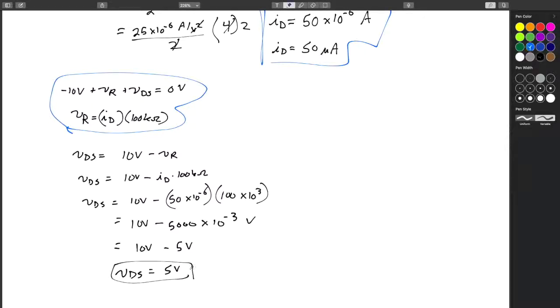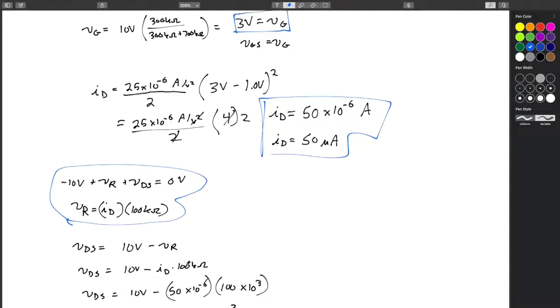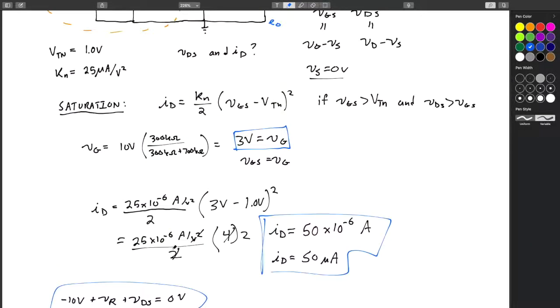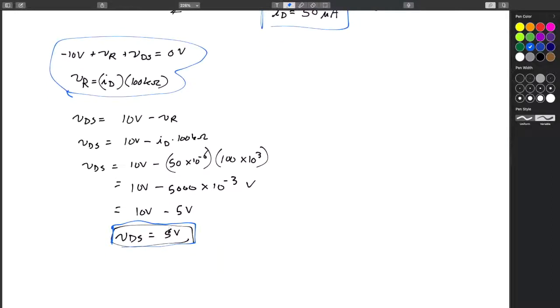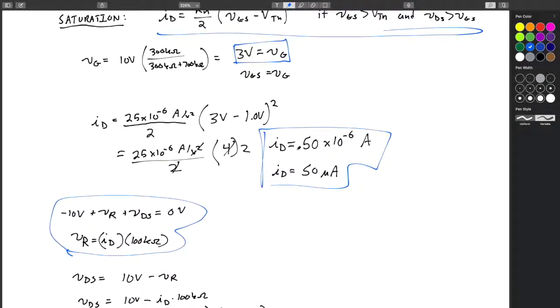Good. Let's actually circle that in blue because that's, we're done. Because VDS is 5 volts, ID is 50 microamps. And the thing I do just because I'm weird is I would actually go back and make sure, did this VDS follow the requirements needed for saturation? Even though we said it was a given, I just, that's just me being me. So I would go back and look and say, is VDS greater than VGS? We found out VGS was 3. VDS ends up solving for 5. We're good to go.